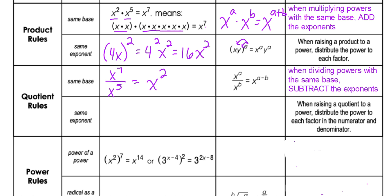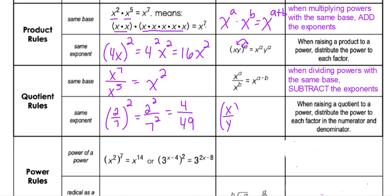The same kind of idea applies to the quotient rule with the same exponent. If I have two things being divided but raised to the same power, I can distribute that power to both parts of the quotient. The generic rule is: (x/y)^a = x^a / y^a.